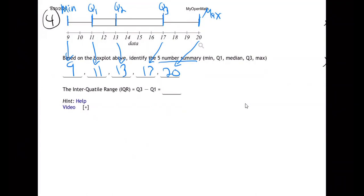And finally, what's the interquartile range, Q3 minus Q1? Well, Q3 is this minus Q1 is that. So the answer is 6, and that's all for number 4.